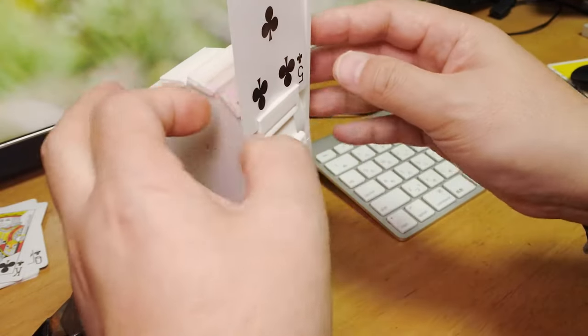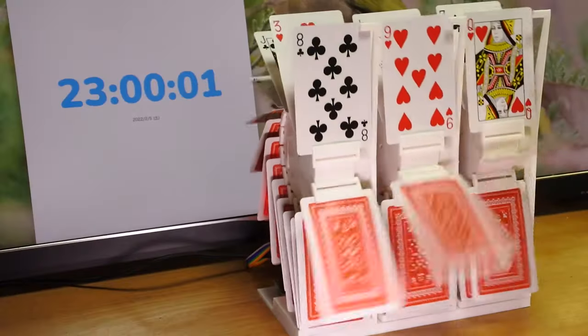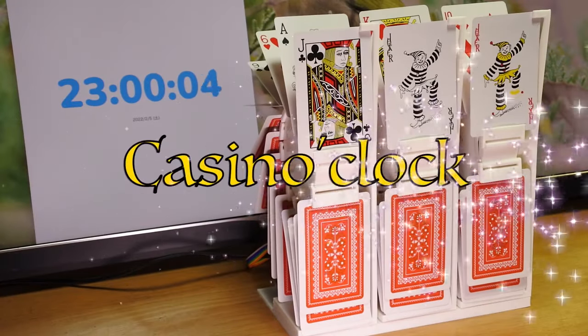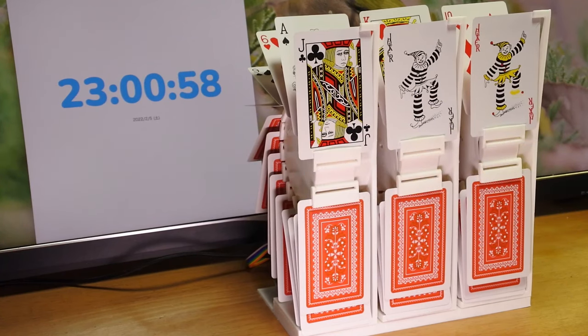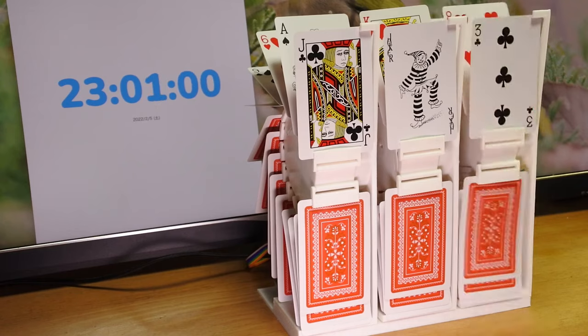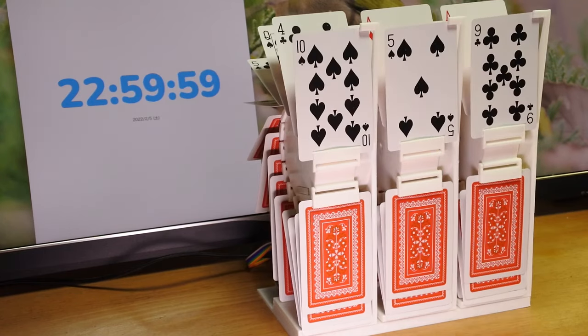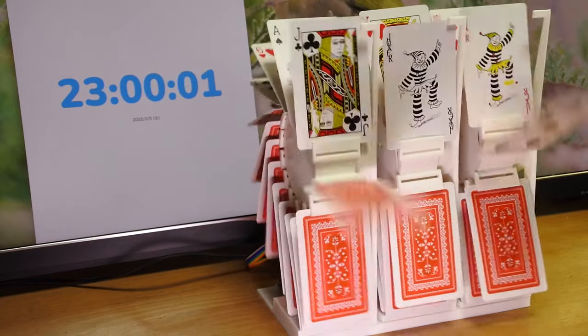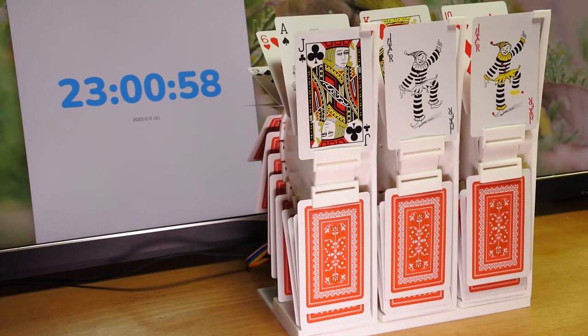Split flap displays have been used in clocks for decades, but I don't think I've ever seen one that uses playing cards. That's exactly the idea behind the Casino Clock by Shinsaku Hiyura. It displays the current time on an array of three playing cards. Each digit of the clock is represented by the value of the card, with jacks for 11, queens for 12, and the joker is zero.